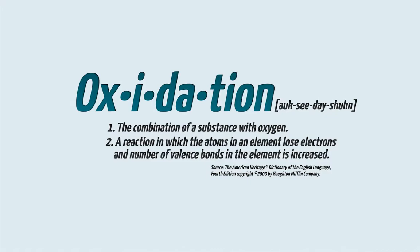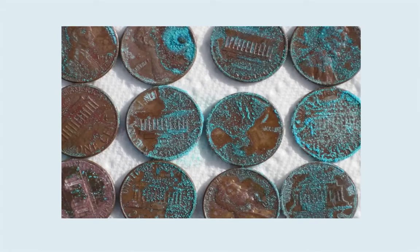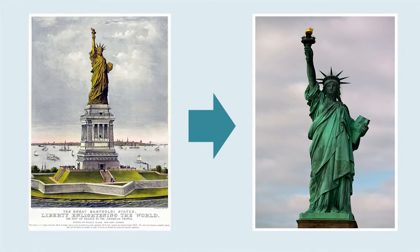We can see oxidation every day. The browning of the inside of an apple is an example of slow oxidation, as is the green color on copper. The Statue of Liberty was originally copper colored, but oxidation turned the brownish metal to the green we recognize today.